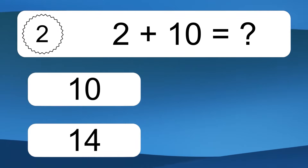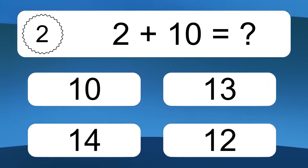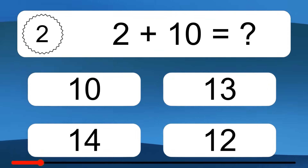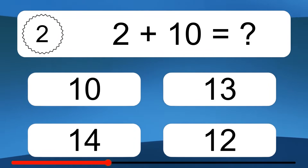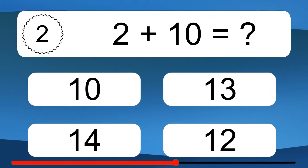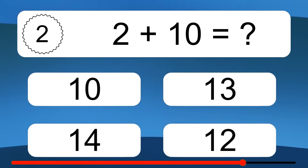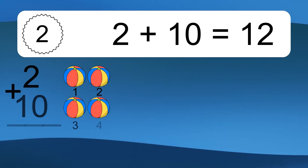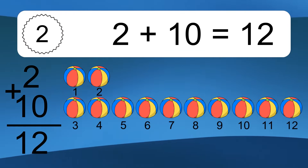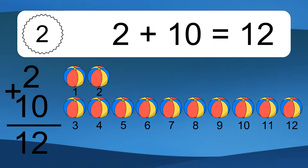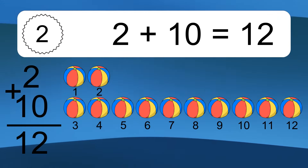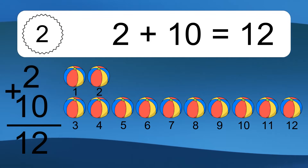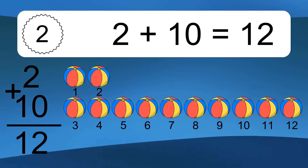2 plus 10 equals what? 2 plus 10 equals 12. Let's count it. 1, 2, 3, 4, 5, 6, 7, 8, 9, 10, 11, 12.